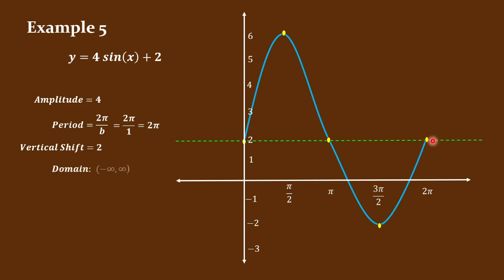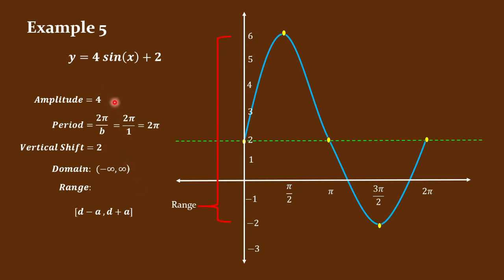For the domain, that would be negative infinity to infinity. The range can be computed using d ± a. So d is the vertical shift plus or minus the amplitude, which is 4: 2 ± 4. That gives us negative 2 to 6.